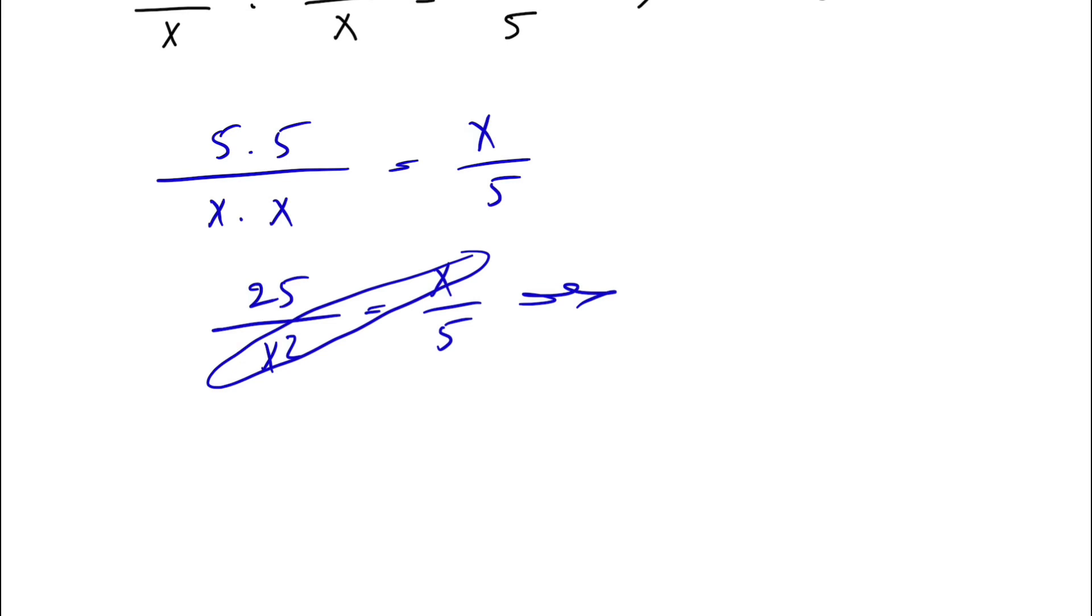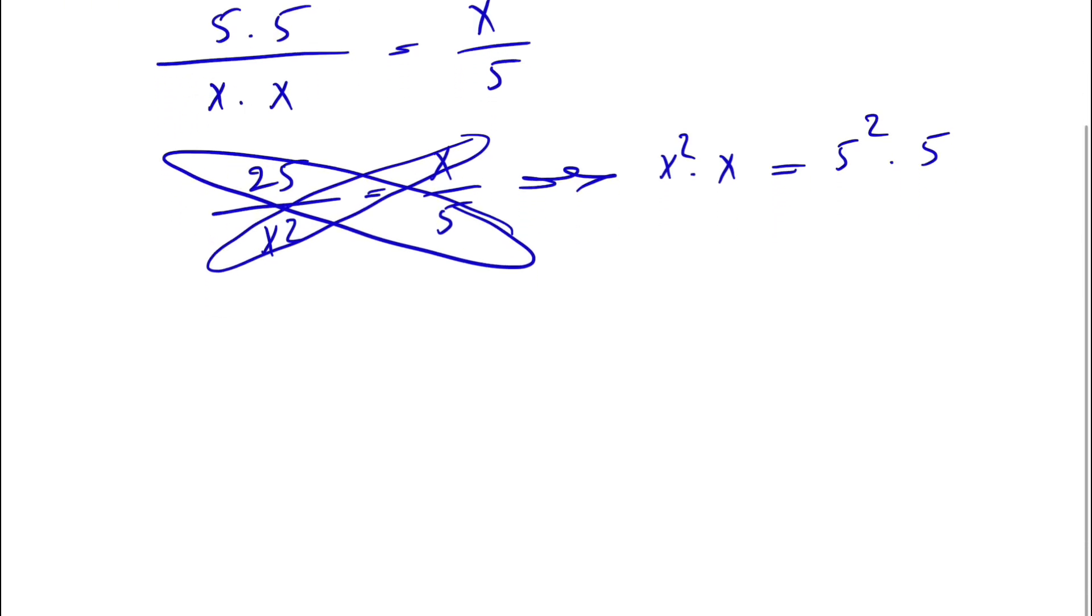We have the multiplication of these two, which is x squared times x is equal to multiplication of the other two, which is basically 25, which is 5 squared times 5. Now what we have is x cubed is equal to 5 cubed.